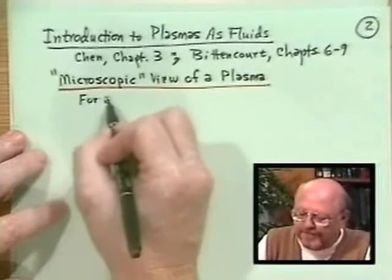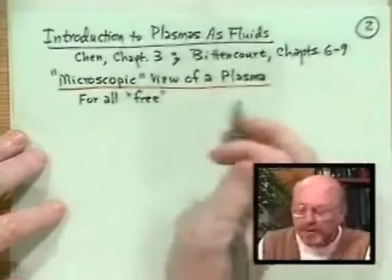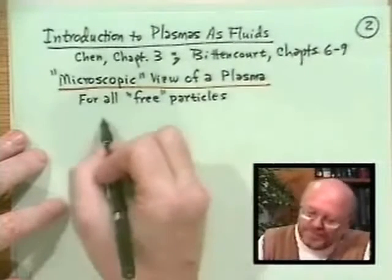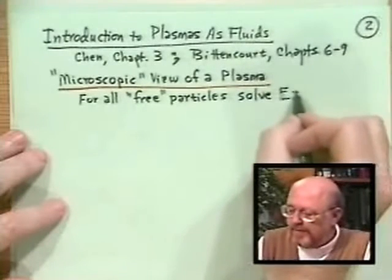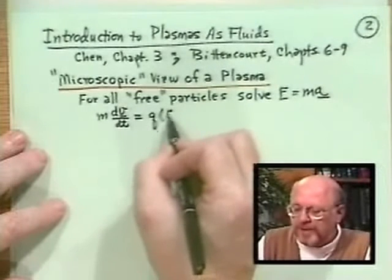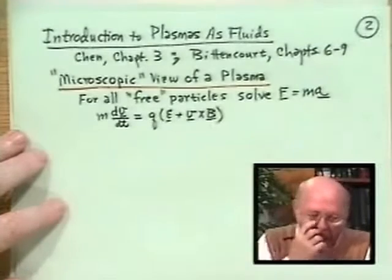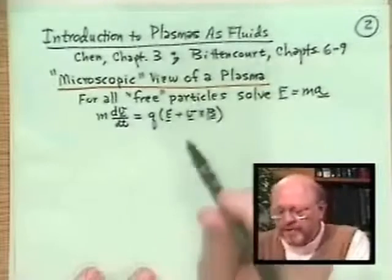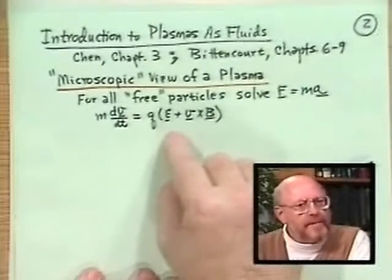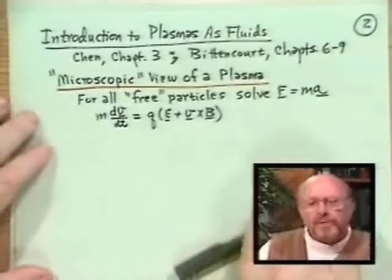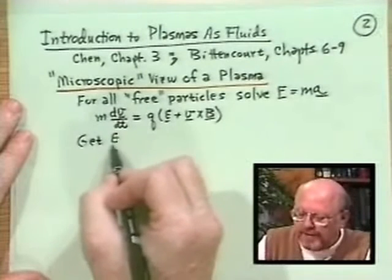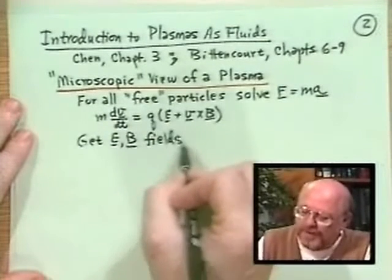For all free particles — certainly our charged particles in the plasma are not bound, they're just flipping around — we should solve F = ma: m dV/dt = Q(E + V×B). For every particle, given the electric and magnetic fields, we get the particle trajectory. We get E and B from Maxwell's equations.